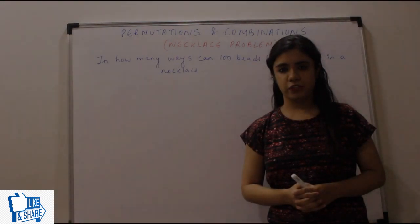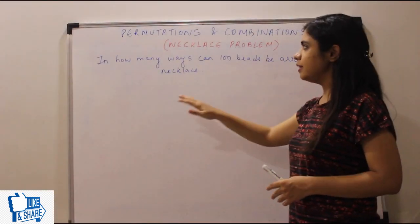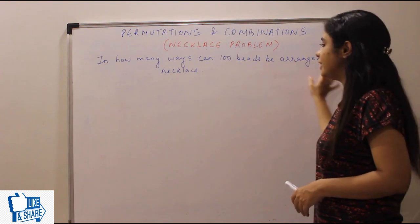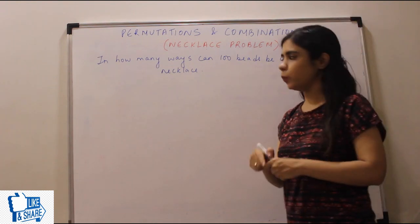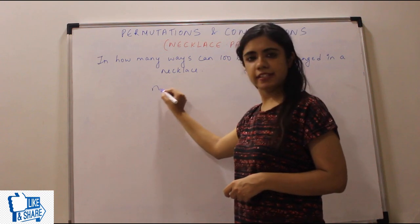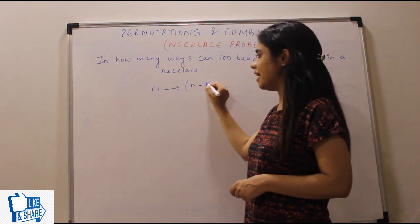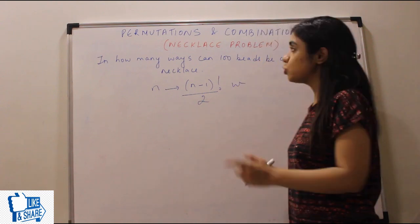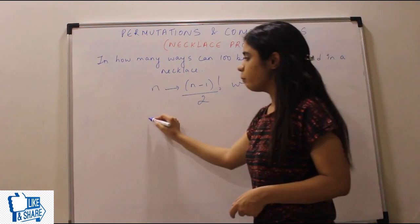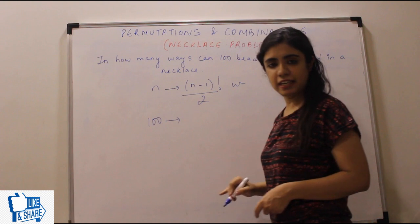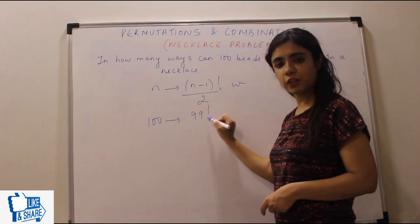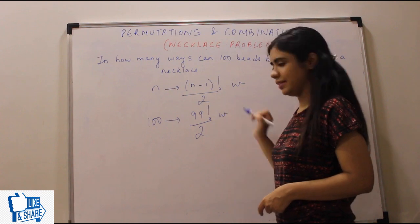So they can ask you as a necklace problem or a garland problem also. Now let's look at a question. What does it say? In how many ways can 100 beads be arranged in a necklace? 100 beads. We know n beads can be arranged in n minus one factorial upon two ways.